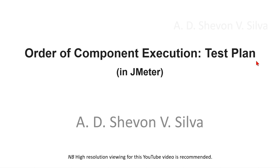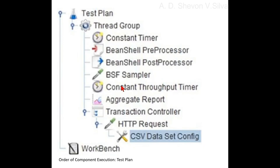Here you can see the test plan in order of component execution in JMeter. This shows the order of execution in the test plan. As you can see in the JMeter test plan, the components are not in sequence. However, JMeter will rearrange them according to the order of execution.